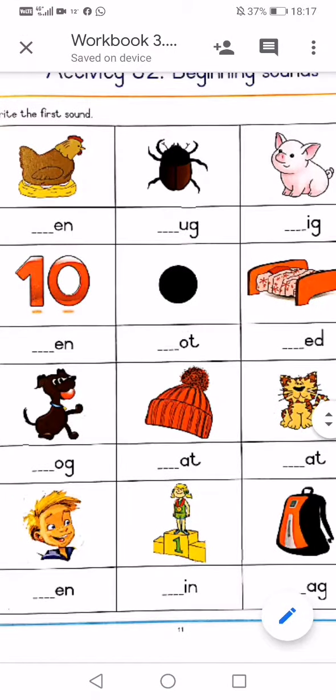The first picture is hen. They've got the N. What is missing? The H. H-N-hen.